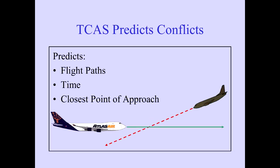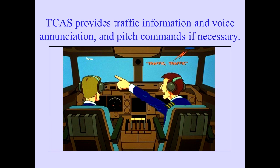TCAS then predicts current flight paths and time to closest point of approach. TCAS displays traffic information using symbols on the ND. If traffic requires special attention from the crew, TCAS issues voice annunciations, traffic symbols on the ND, and, if necessary, pitch commands on the PFD. All traffic symbols, advisories, and voice annunciations will be discussed later in the module.